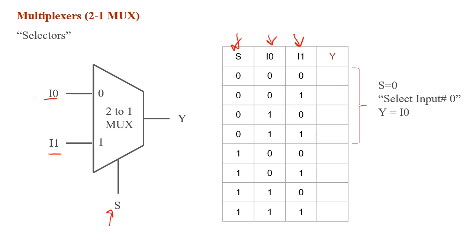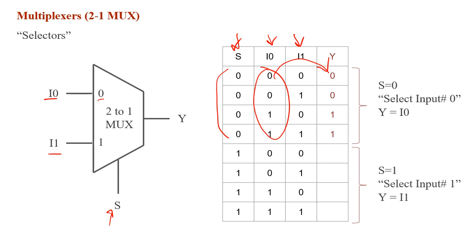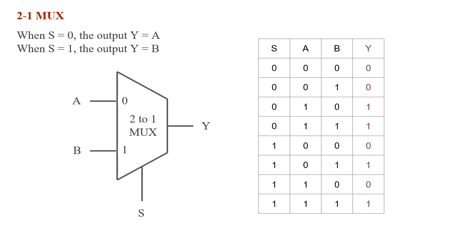When s is 0, we're going to output the first option, which is i0. So when s is 0, the output is exactly equal to i0 — it's been outputted directly as it is. When s is 1, we select input number 1 to be outputted, so y, the output, is going to be equal to i1.